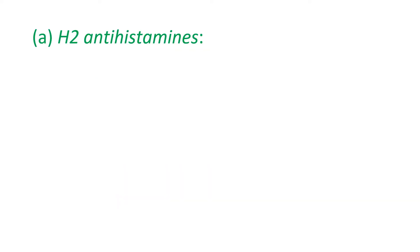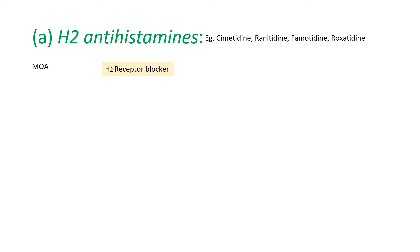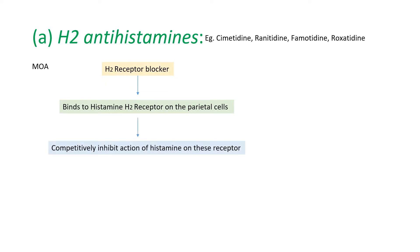The first drug class in detail is H2-antihistamines, for example cimetidine, ranitidine, famotidine, and roxatidine. Regarding mechanism of action: H2-receptor blockers bind with the histamine-2 receptor on the parietal cell and thereby competitively inhibit the action of histamine on these receptors, ultimately reducing gastric acid secretion. Cimetidine and similar drugs bind with the H2-receptor present on the parietal cell and thereby reduce gastric acid secretion.